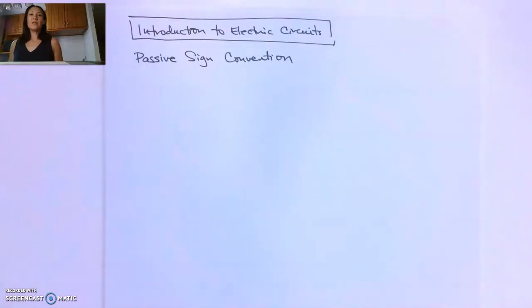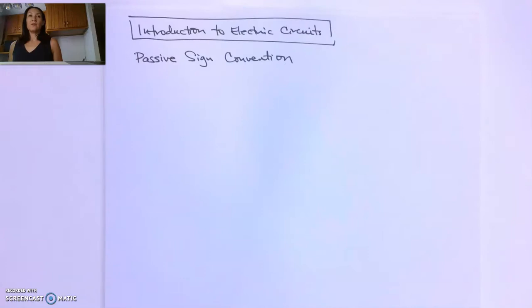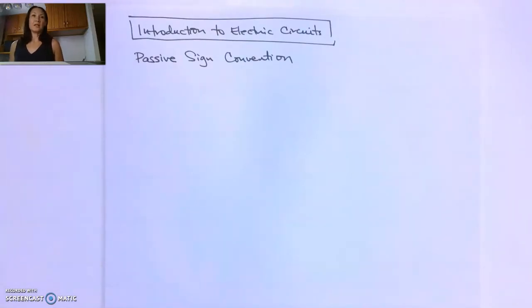We saw in the last video that power sources have a positive and a negative side. Voltage drops in circuits are also positive or negative. And the convention that establishes which is which is called the passive sign convention.